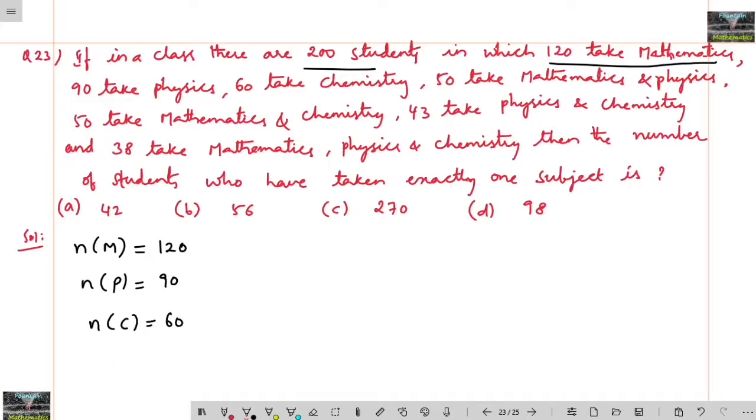Let me write here: n of maths and physics, n(M intersection P) equals 50, and n of maths and chemistry equals 50, and number of physics and chemistry equals 43, and number of maths and physics and chemistry equals 38.